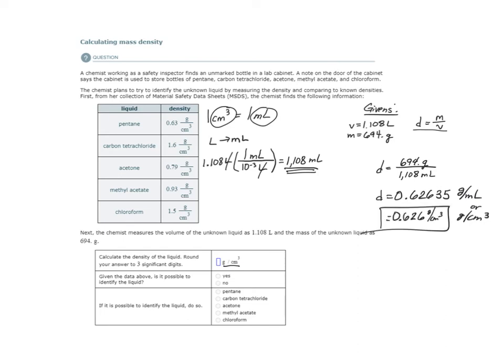Given the data above, is it possible to identify the liquid? Well, when we look, it's not close to chloroform or methyl acetate, kind of close to acetone. Let's see if there's a better answer. It's not carbon tetrachloride. Ah, it's really close to pentane. 0.626 actually rounds up to 0.63. So I would say it is possible and the most likely identity of the unknown liquid is pentane.